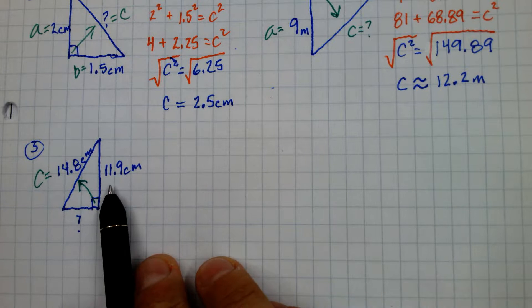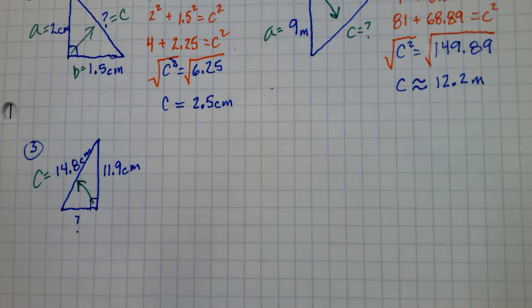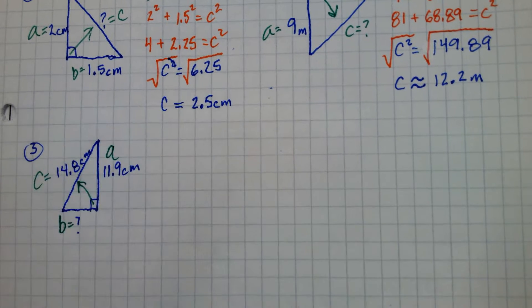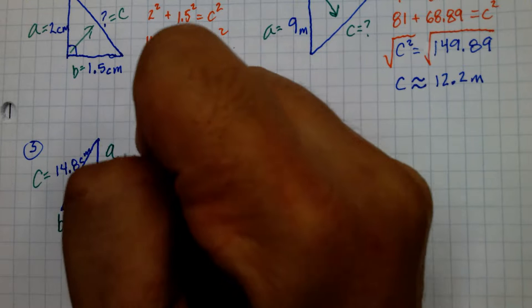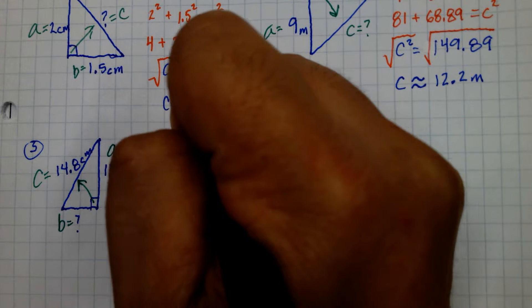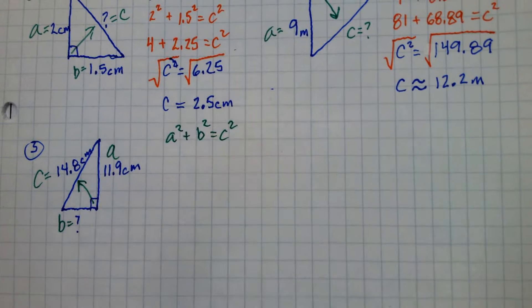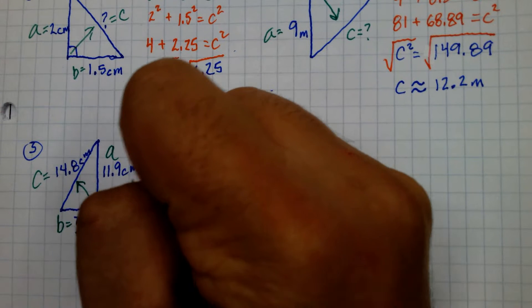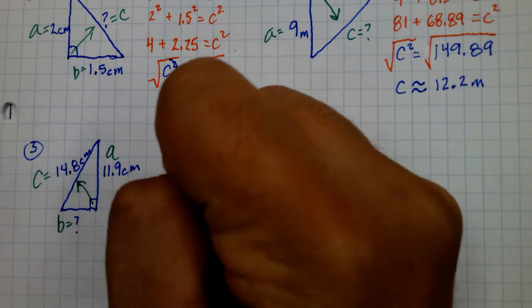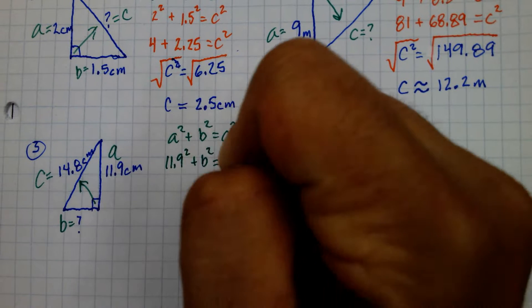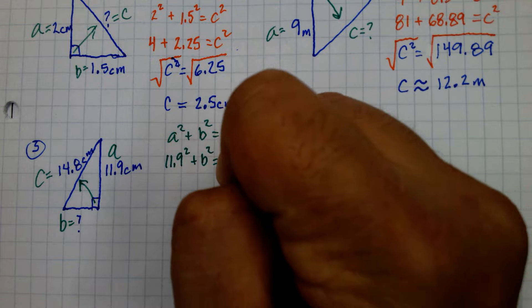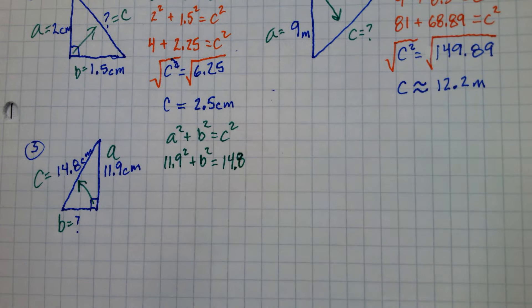So 11.9 could be A or B. Doesn't matter. The legs can interchange. What do you want to make A or B? So this is B then. We don't know B. So we start again with A squared plus B squared and C squared and we plug in A squared. Well we know A is 11.9 squared plus B squared and C we know is 14.8.